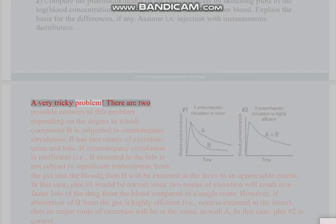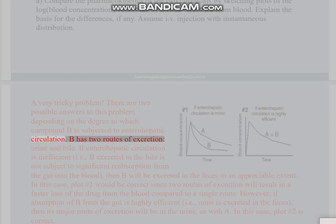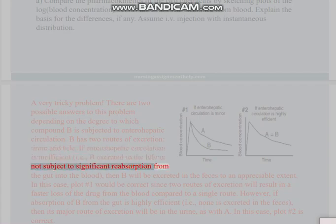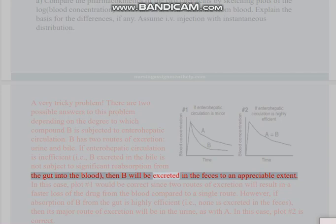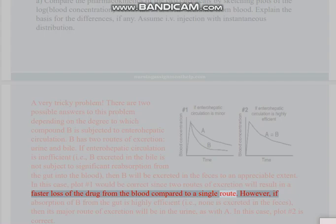A very tricky problem. There are two possible answers to this problem, depending on the degree to which compound B is subjected to enterohepatic circulation. B has two routes of excretion: urine and bile. If enterohepatic circulation is inefficient (i.e., B excreted in the bile is not subject to significant reabsorption from the gut into the blood), then B will be excreted in the feces to an appreciable extent. In this case, plot number one would be correct, since two routes of excretion will result in faster loss of the drug from the blood compared to a single route.